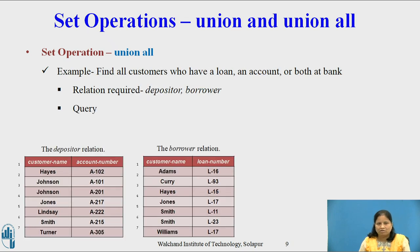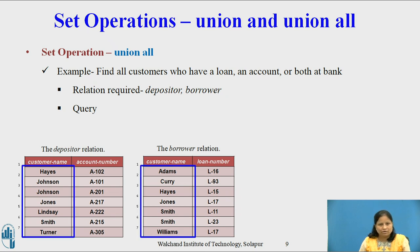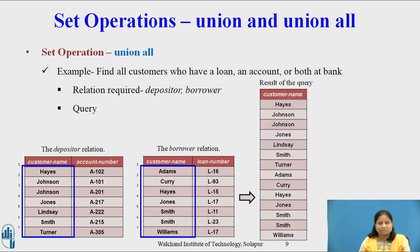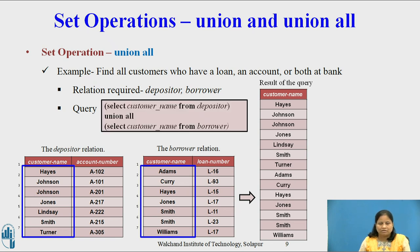Example of Union All. Find all customers who have a loan, an account, or both at the bank. The relations required are Depositor and Borrower. As we use the Union All operator, it features all the tuples of Depositor and Borrower. Hence the result contains all 14 tuples. The query can be written as: SELECT CUSTOMER_NAME FROM DEPOSITOR UNION ALL SELECT CUSTOMER_NAME FROM BORROWER.